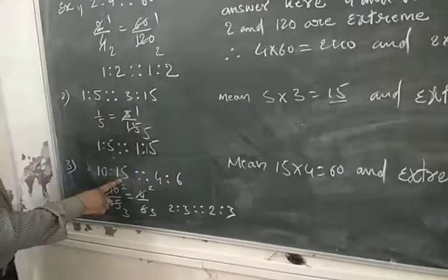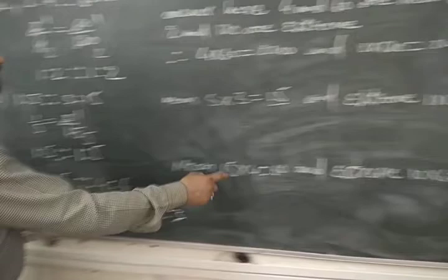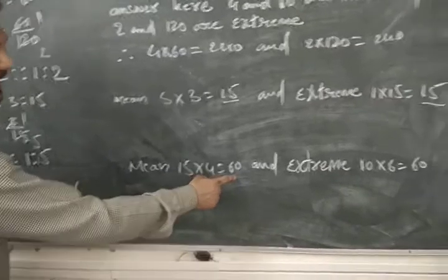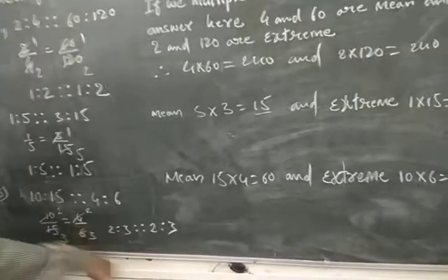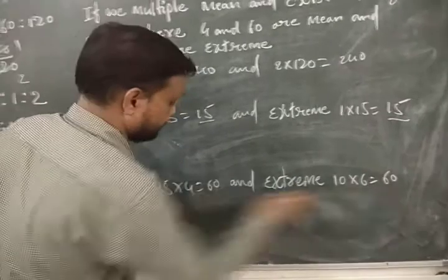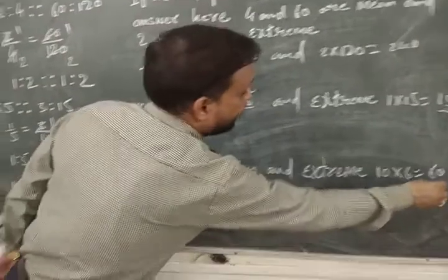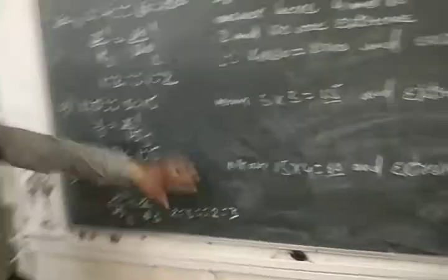Now I multiply mean and extreme. Here the mean is fifteen and four. Fifteen multiplied by four equals sixty. And the extreme: ten multiplied by six equals sixty. So these are all same, it means these are in proportion.